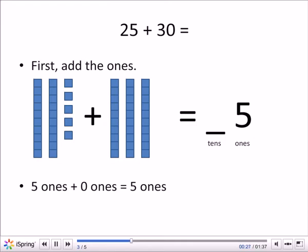So first we're going to add the ones. The ones are by themselves. They're not in stacks of 10. There's five: 1, 2, 3, 4, 5.